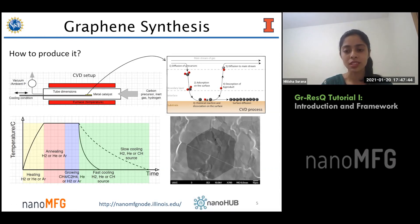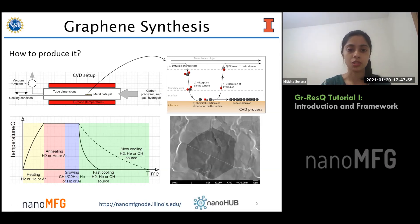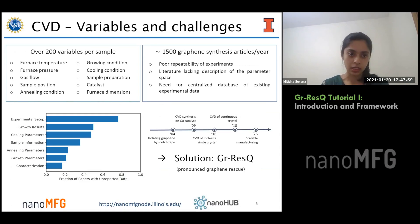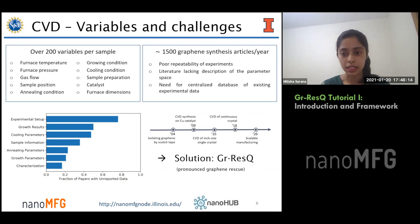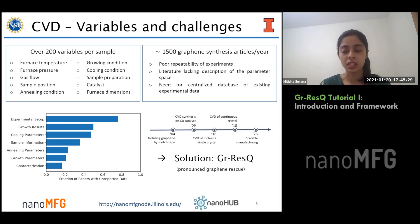The process is not very simple. Since our desired end product is just a single layer of atoms, there can actually be more than 200 parameters affecting the synthesis of graphene. The main ones include furnace temperature, furnace pressure, gas flow, the catalyst, cooling conditions, and growth conditions. There are about 1,500 articles published every year on graphene synthesis, but there is still a lack of large-scale manufacturing methods due to poor repeatability of experiments and literature lacking description of all important parameters. This is where we need a centralized database of existing experimental data.